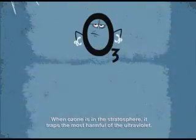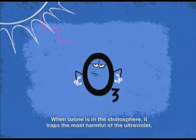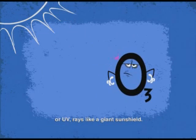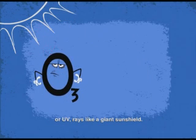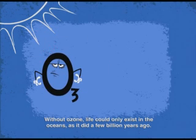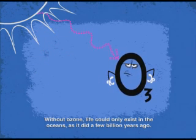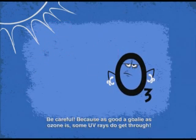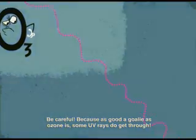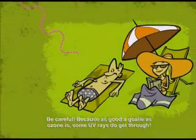When ozone is in the stratosphere, it traps the most harmful of the ultraviolet, or UV rays, like a giant sun shield. Without ozone, life could only exist in the oceans, as it did a few billion years ago. Be careful, because as good a goalie as ozone is, some UV rays do get through.